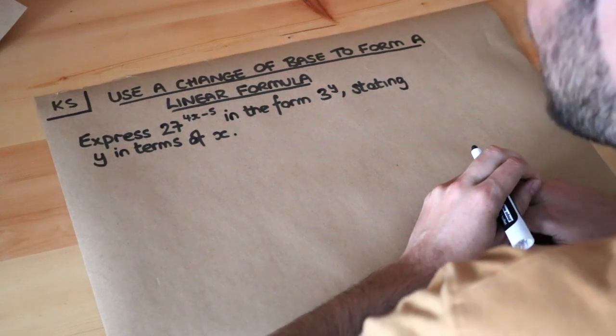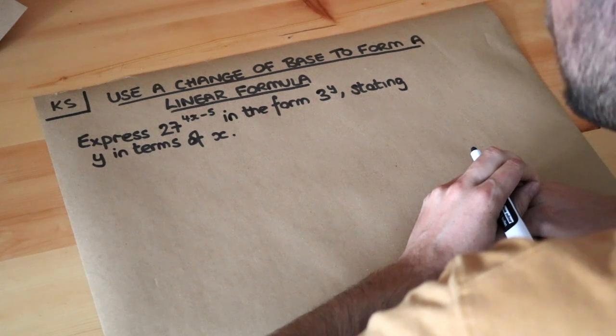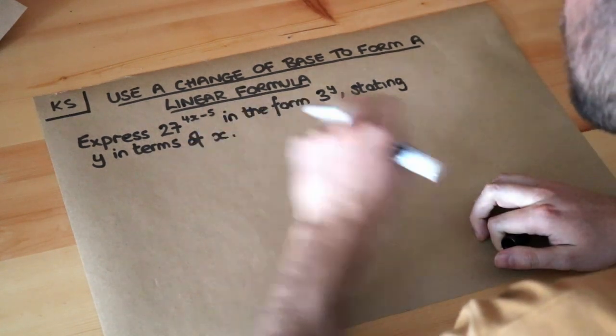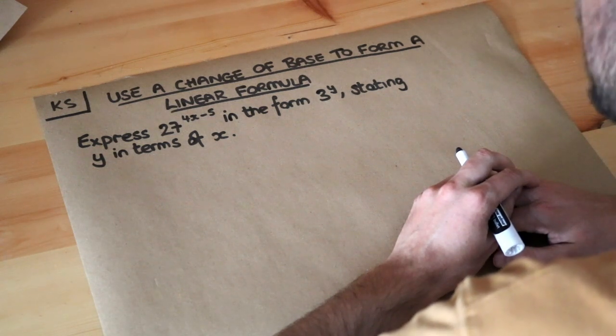Hello and welcome to this Dr. Austin Mass's key skill video on using a change of base to form a linear formula. So we've got this question here: express 27 to the power of 4x minus 5 in the form 3 to the y, stating y in terms of x.